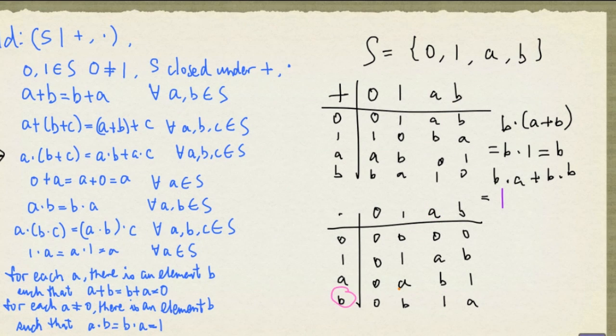And what about b times b? Well, b times b is a. So we have 1 plus a. Let's look at the table for plus to see what 1 plus a is. 1 plus a is b. And as you can see, these two are equal.